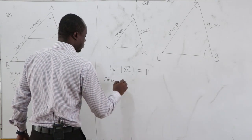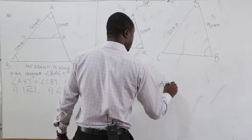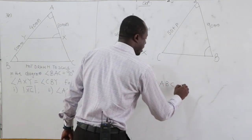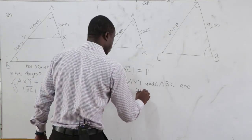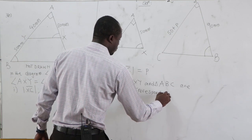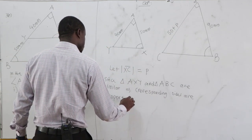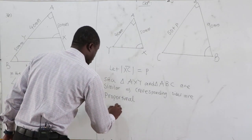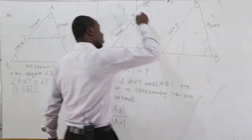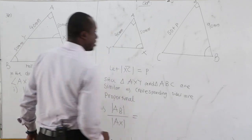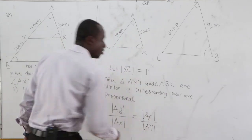Since triangle AXY and triangle ABC are similar, this implies that the corresponding sides are proportional. Therefore we can say AB over the corresponding side AX is equal to AC over AY — corresponding sides are proportional.